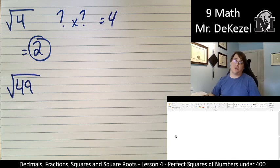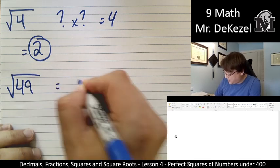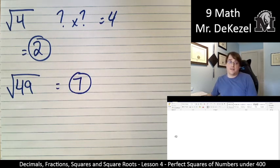So we're thinking, what number multiplied by itself gets us 49? Well, last time we did six times six and it was 36, and we did eight times eight, which was 64. And those are two numbers that are right around there. So seven times seven gets us 49. So that would be our answer.